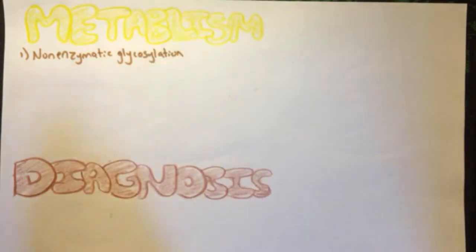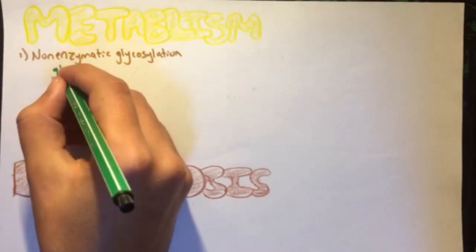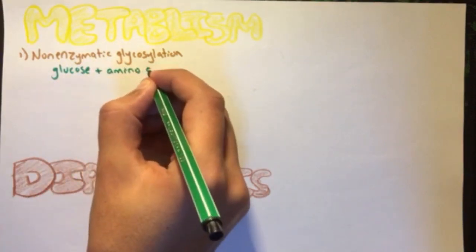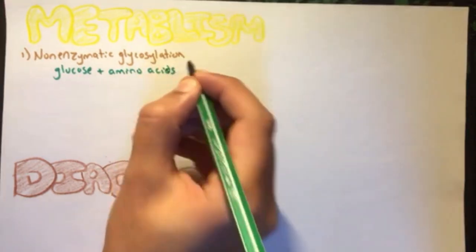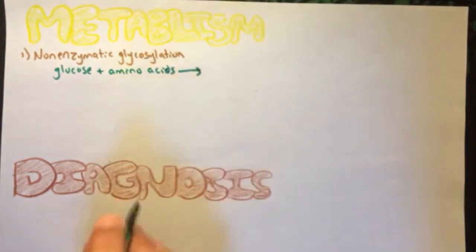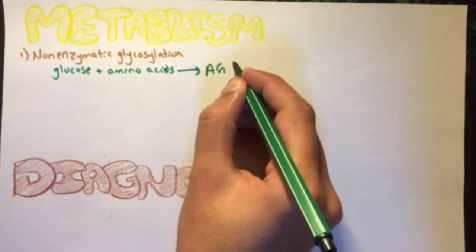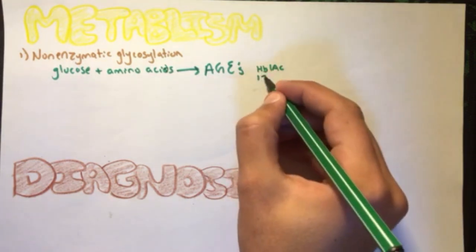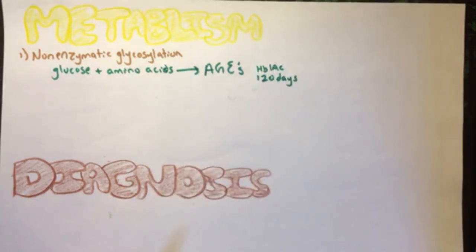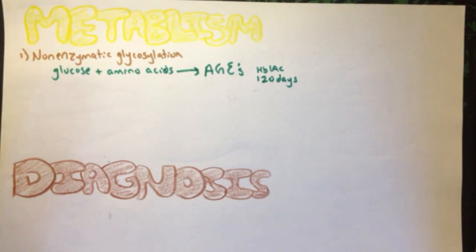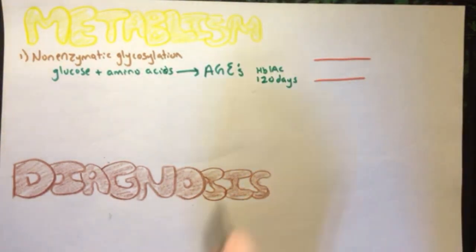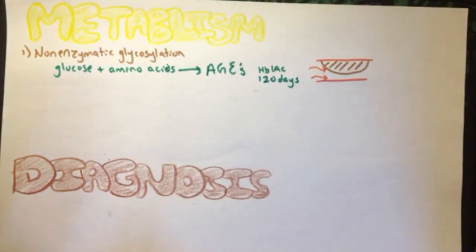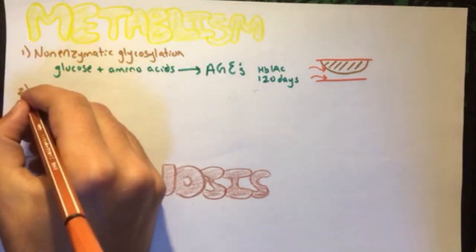The first one is called non-enzymatic glycosylation, meaning that glucose will bind to free amino acids in the blood spontaneously. These will produce advanced glycosylation end products, or called AGEs. These are measured by the HbA1c test, which reflect blood glucose levels for the past 120 days. These AGEs forming on proteins like collagen cross links with polypeptides trapping non-glycosylated proteins and enhance the deposition of cholesterol, hence accelerating atherosclerosis, which is a formation of plaque in the blood vessels that can lead to MI.